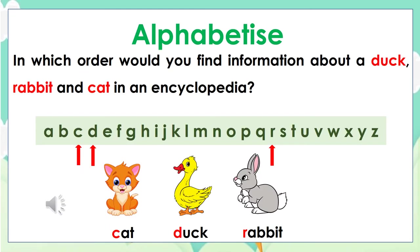So dear students, if you happen to look up information about a duck, rabbit, and a cat in an encyclopedia, in which order would you look for them? That's right — the first animal you would find is cat, followed by duck, and then rabbit.